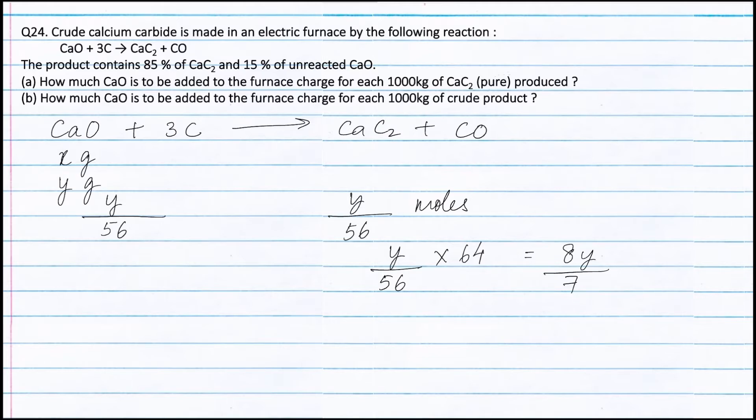The weight of calcium oxide that is left behind is x minus y grams. Now the total weight of the remaining calcium oxide and calcium carbide formed is x minus y grams plus 8y by 7 grams, which equals x plus y by 7 grams.